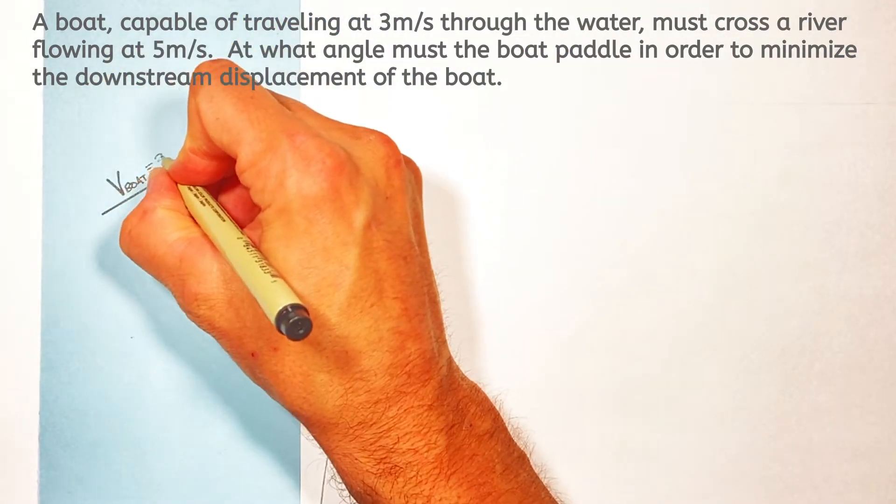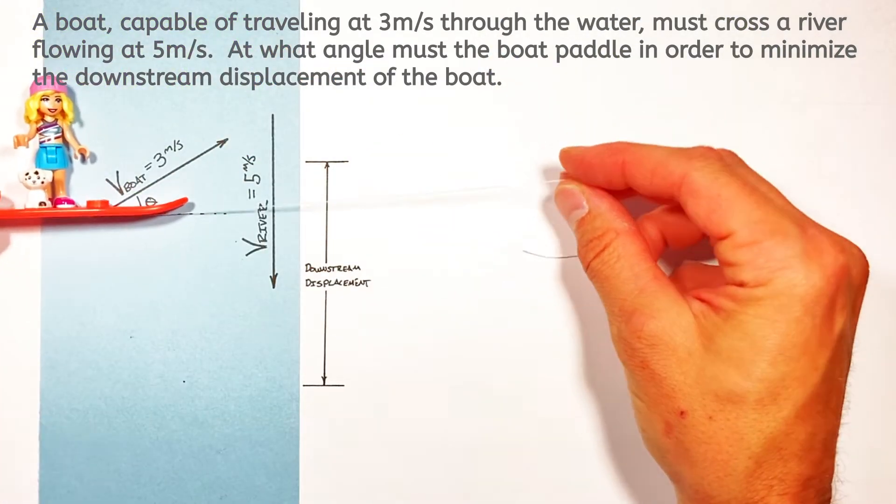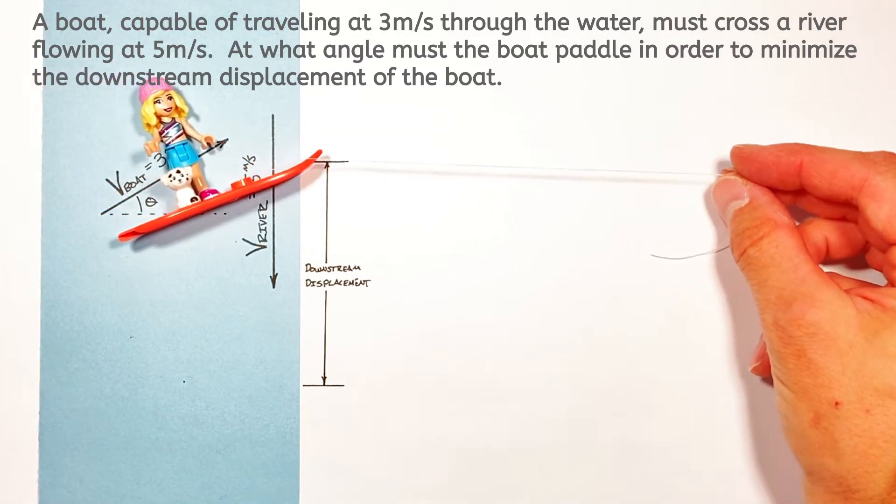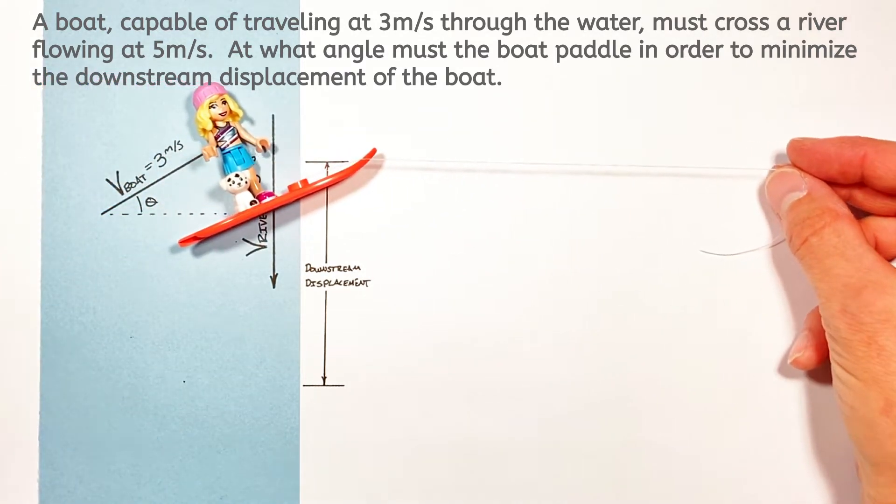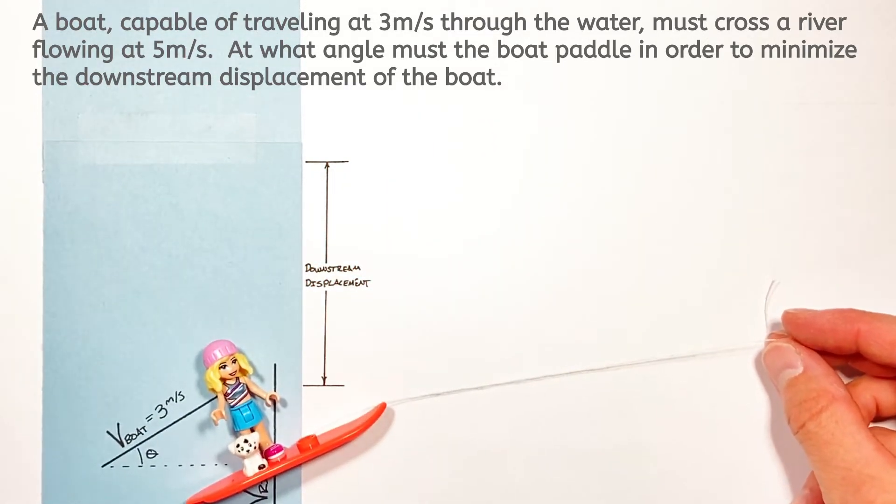So the hard part in solving for the downstream displacement is that it's a bit of a balancing act. You see if the boat was to point straight across the river it would get across the river rather quickly, but the whole time it was moving across the river it would also be getting swept downstream rather quickly.